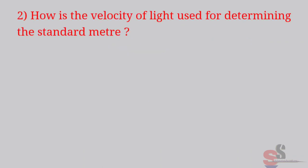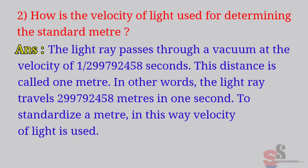Second, how is the velocity of light used for determining the standard meter? Answer: The light ray passes through a vacuum at the velocity of 1 per 299,792,458 seconds. This distance is called 1 meter. In other words, the light ray travels 299,792,458 meters in one second. To standardize a meter, in this way, velocity of light is used.